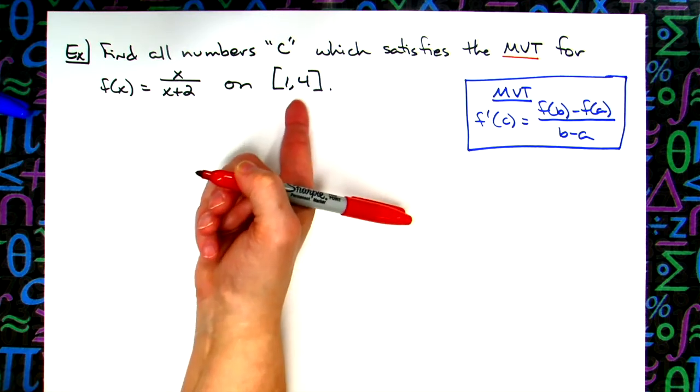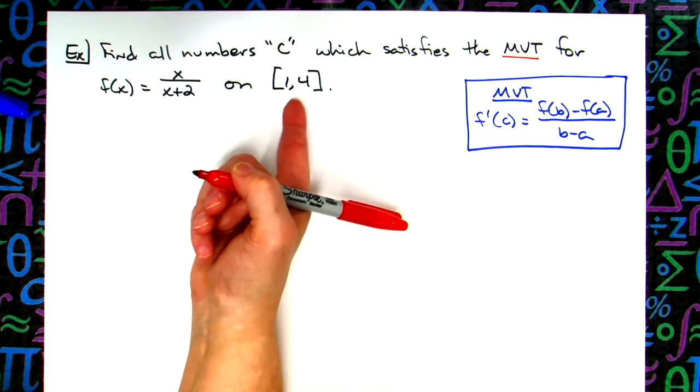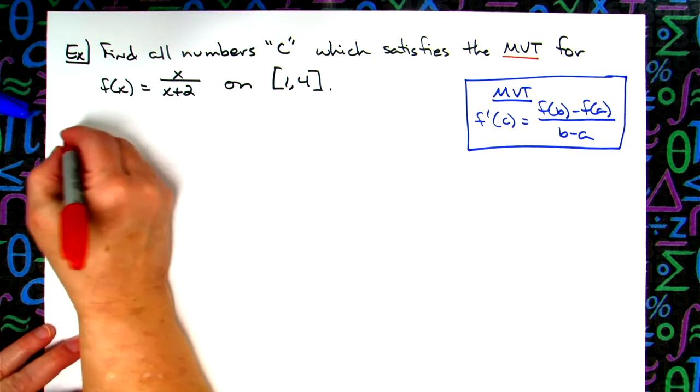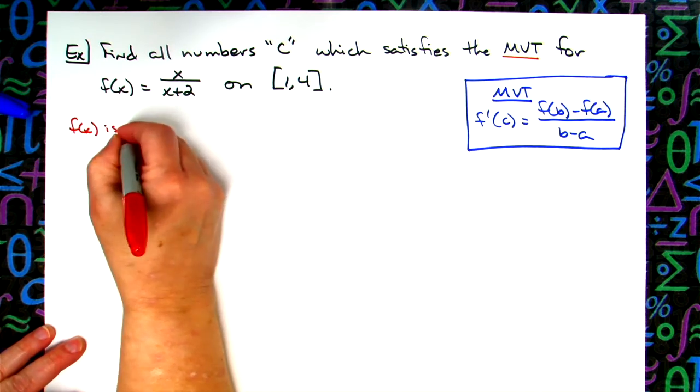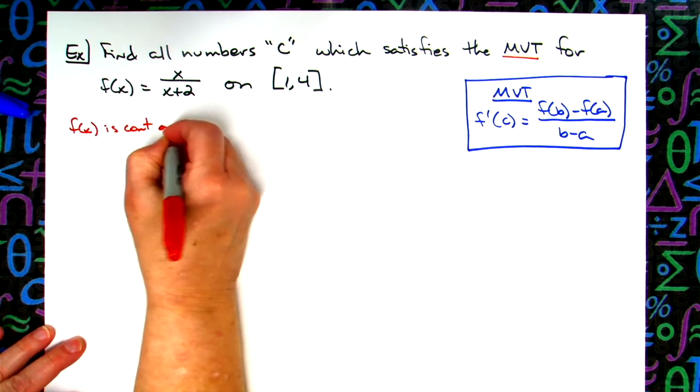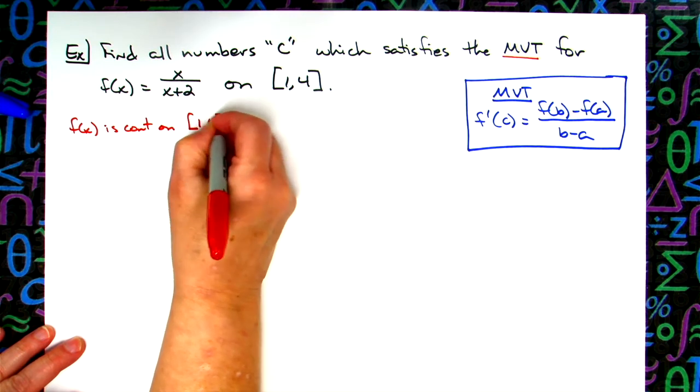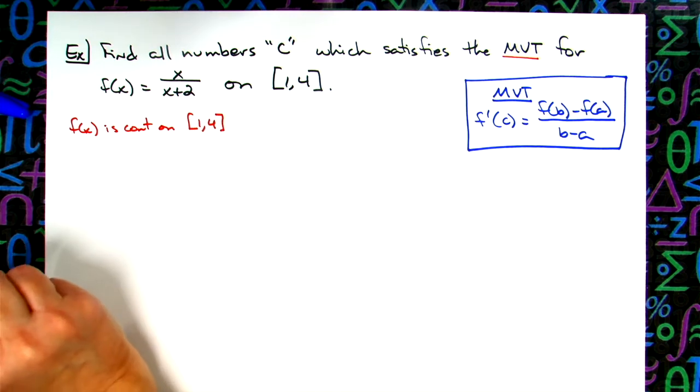However, that's not from 1 to 4. So f(x) we can say is continuous on that closed interval from 1 to 4 because that's the only portion of the function we are concerned with.